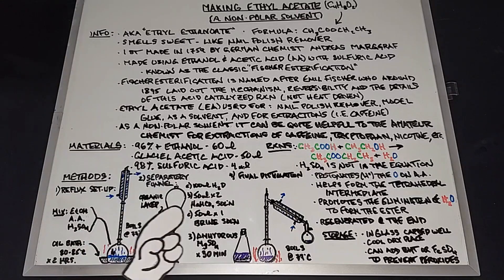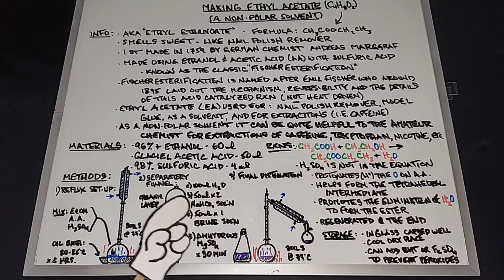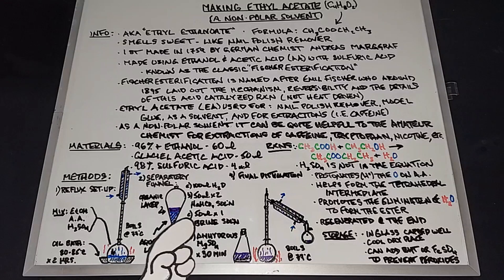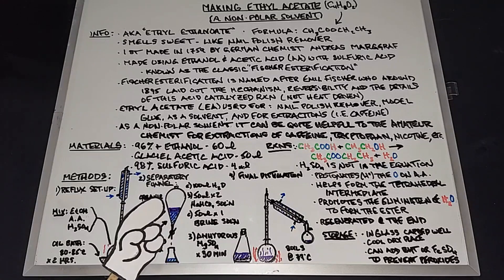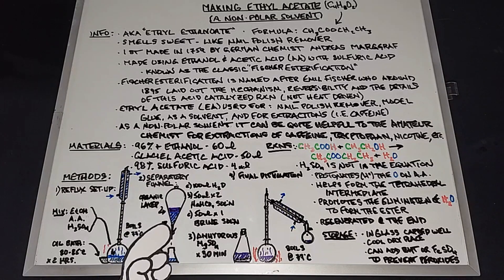Once you're done doing that twice, then we're going to put in 50 milliliters of a brine solution. That's a saturated salt solution, which will help draw even more water out of this organic layer, which is the ethyl acetate. Once we're done, we'll drain that out.